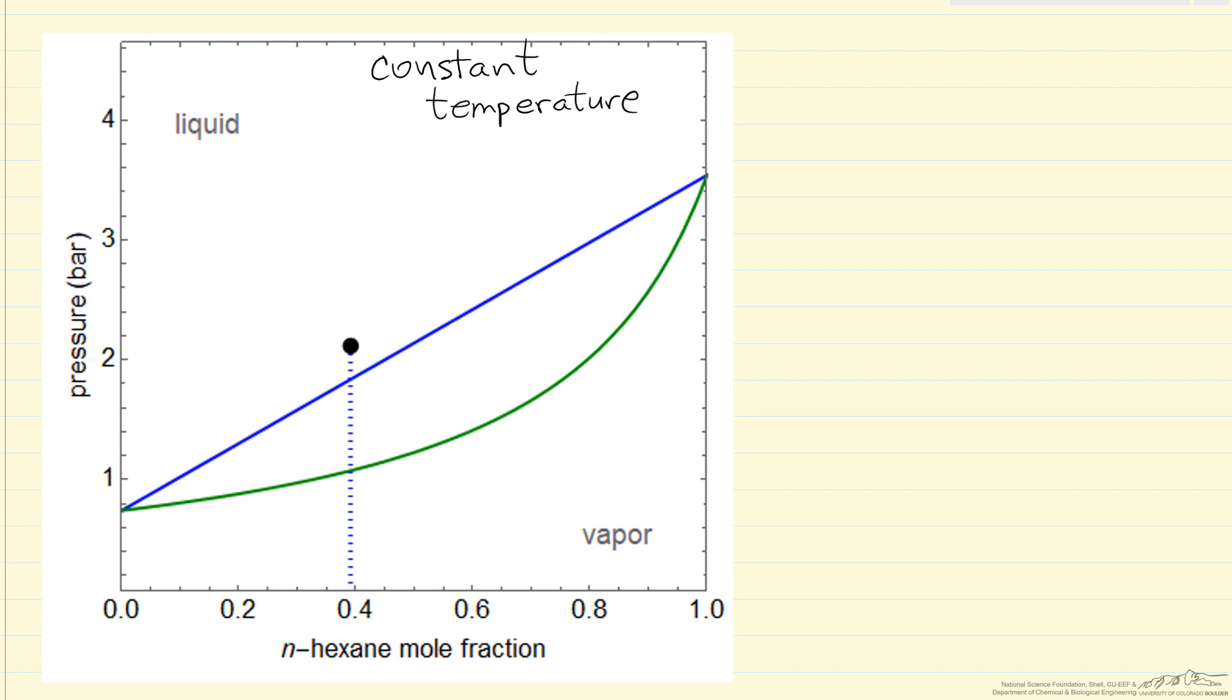If we have a liquid at this point and we were to lower the pressure, here is where we would see the first bubble of vapor. So this then would be the bubble point line. And this would be the bubble pressure at this temperature corresponding to the graph and for this mole fraction of 0.4.